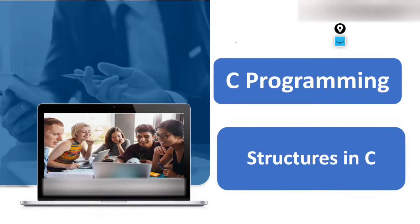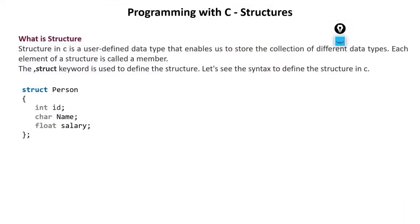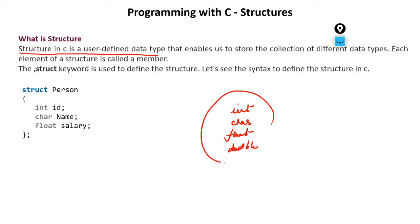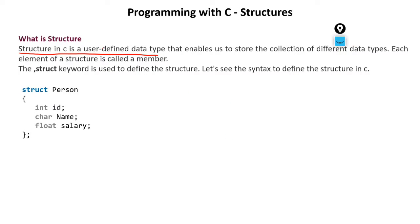Today the topic of discussion is structure in C programming. Structure in C is a user-defined data type. We have learned about integer, character, float, and double — these are predefined data types. In a similar fashion, we can create our own data type, which is called a structure.